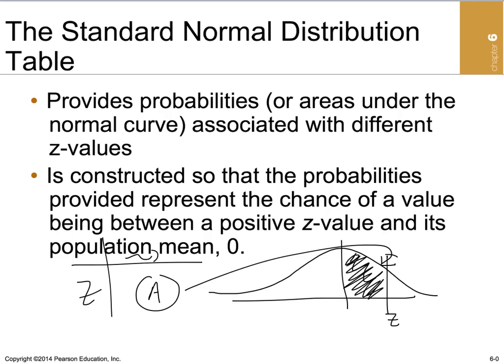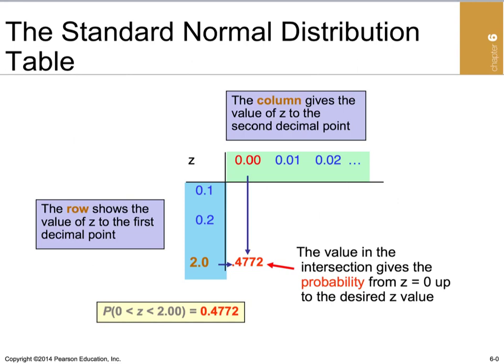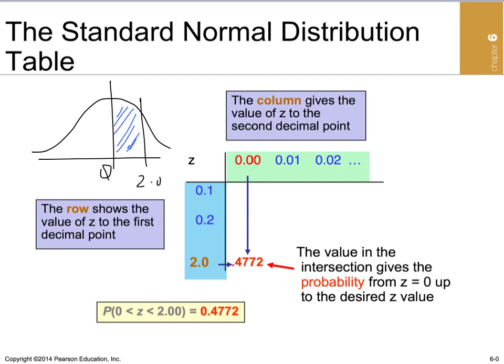Here's another example: for a Z value of 2.0, the area between zero and Z = 2.0 is 0.4772. If we draw that, the center is at zero, Z = 2.0 is to the right, and the shaded region between them represents a probability of 0.4772.